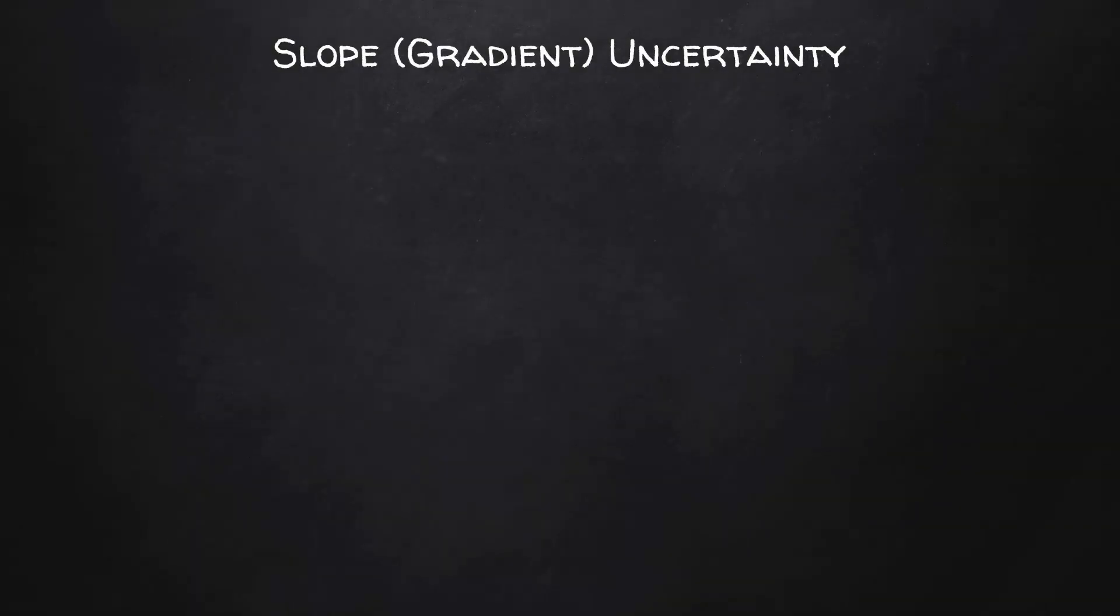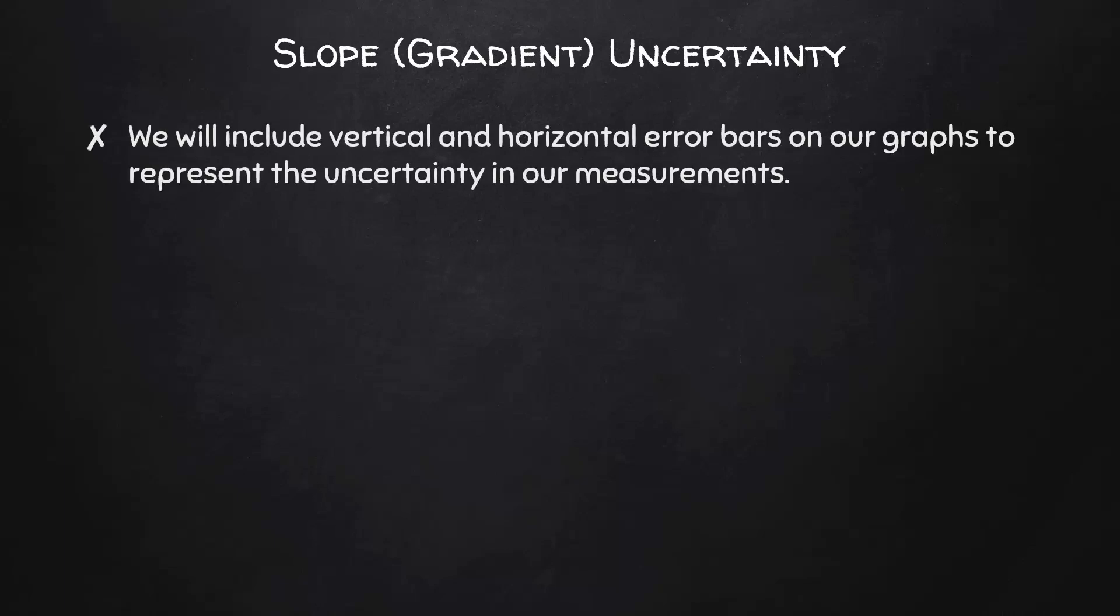Many times we will be calculating the slope of a graph, or the gradient of a graph, as written in IB documentation. Our values for slopes have uncertainties too. When we plot our data on a graph, we will include vertical and horizontal error bars to represent the uncertainty in our measurements.